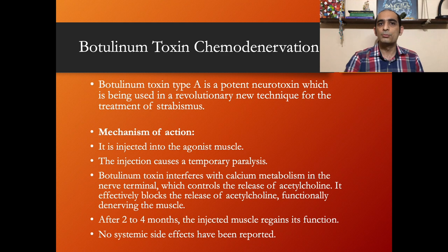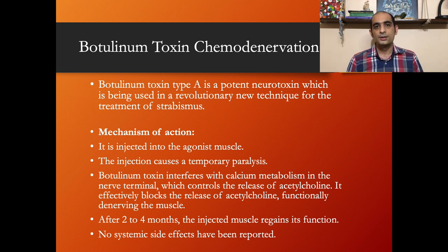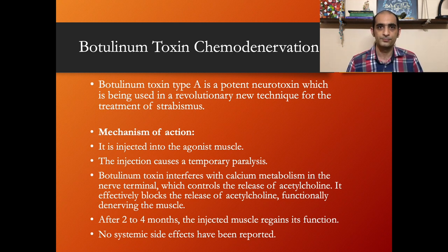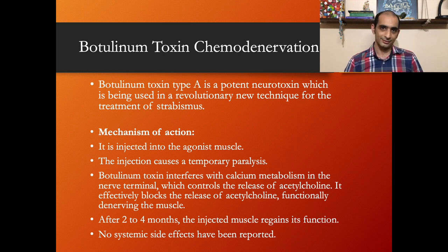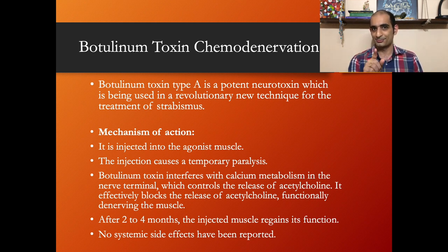Botulinum toxin chemodenervation. Botulinum toxin type A is a potent neurotoxin being used in a revolutionary new technique for the treatment of strabismus. Reports in the literature suggest that botulinum toxin therapy is a safe, cost-effective alternative to surgery for particular types of strabismus. It is injected into the agonist muscle — that is, the medial rectus in esotropia — using an electromyography needle which monitors muscle activity and ensures that the injection goes directly into the targeted muscle.